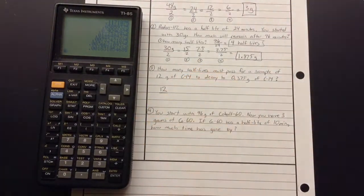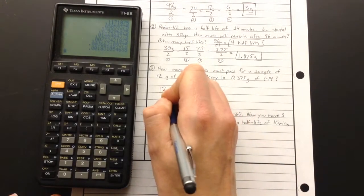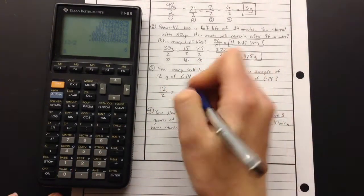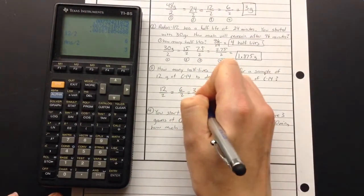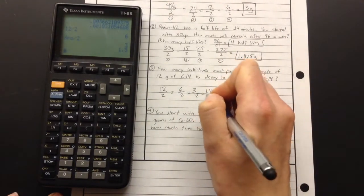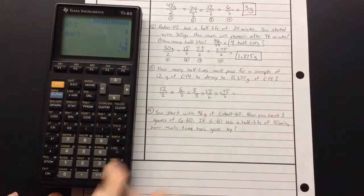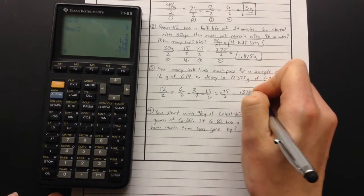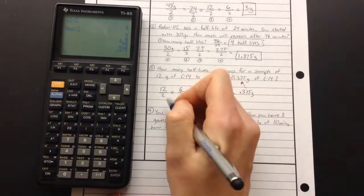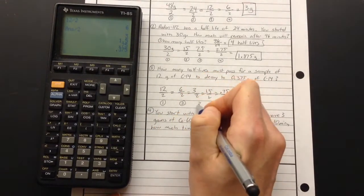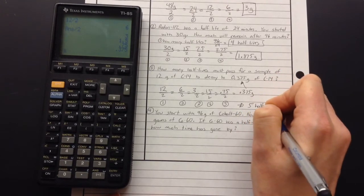So we'll start with our 12. This time the question is really, well, how many times did I have to divide by 2? So let's just start dividing by 2. 12 divided by 2. That's 6, and I'm going to keep going. Divided by 2, that's 3. Divide by 2, that's 1.5. Divide by 2. Am I there yet? That's 0.75. I'll keep going. Divide that by 2, and I get 0.375 grams. So that's what I was trying to get to. So I divided by 2, 1, 2, 3, 4, 5 times. So my answer is 5 half-lives.